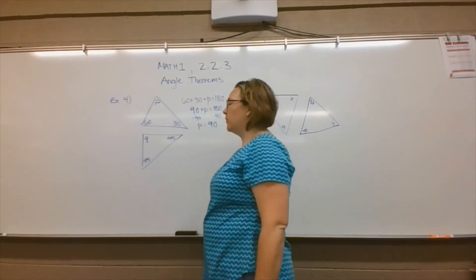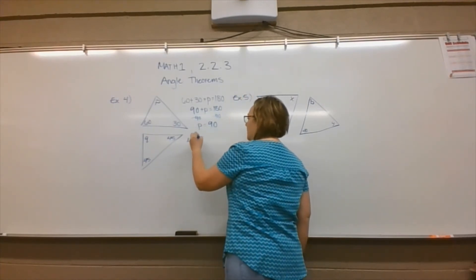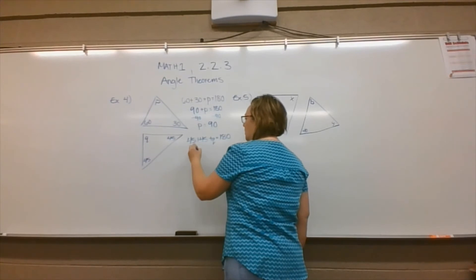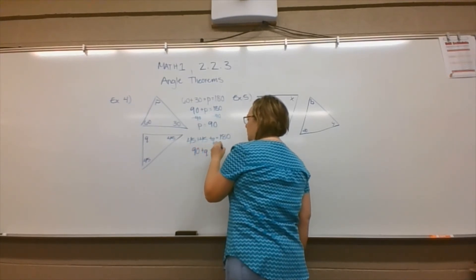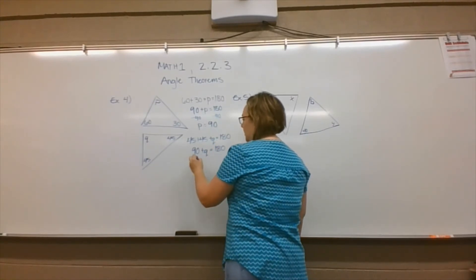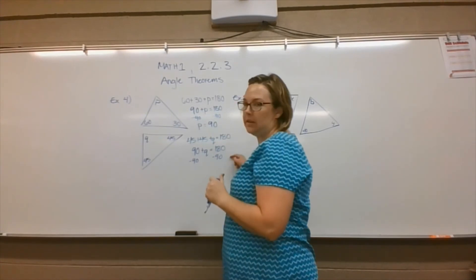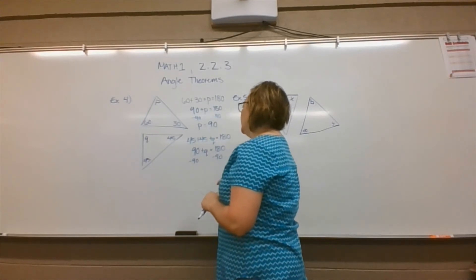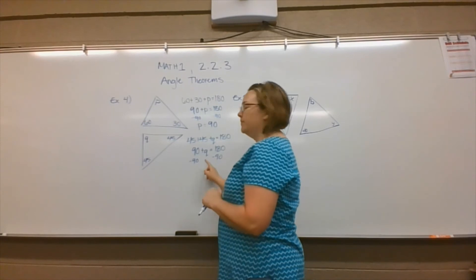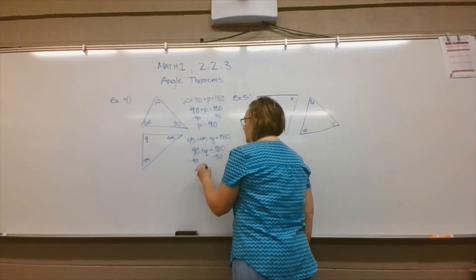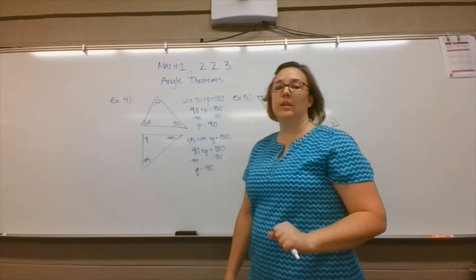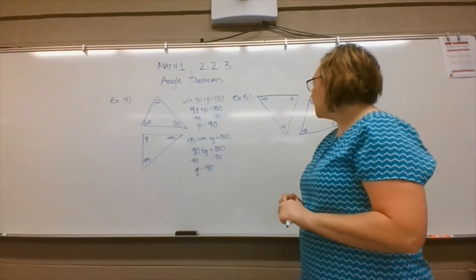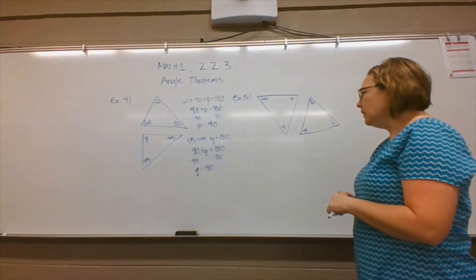I'm going to do the same thing for q. I'm going to say 45 plus 45 plus q equals 180. So 90 plus q equals 180. Subtract 90, and hopefully your brain is already clicking into gear because we had this almost identical situation where we had 90 plus p equals 180, 90 plus q equals 180. So q is equal to 90. What we can say about both p and q is that they are equal to one another. P equals q, or q equals p, they mean the same thing.